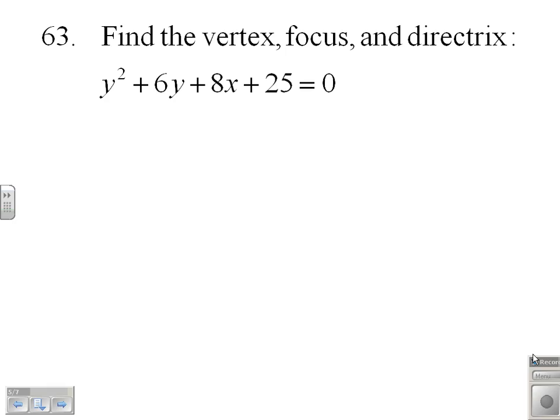So that's going to involve, since this is a y squared parabola, us trying to get this into this form: y minus k squared equals 4p times x minus h.